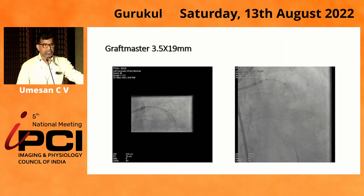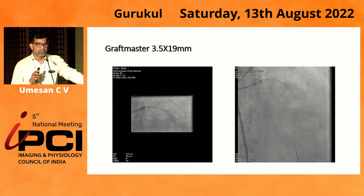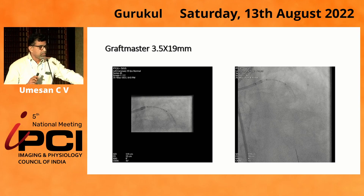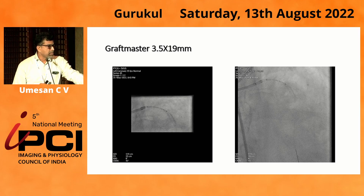So what are the options? When we reviewed his earlier reports from 2011, at the time of his second intervention, it was already noted that the circumflex was filling from the right system — so the circumflex has been totally occluded since then. It was also demonstrated in 2011 that there was an aneurysmal segment. So now we have an aneurysmal segment in the distal LAD and left main, and a tight stenosis.